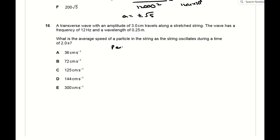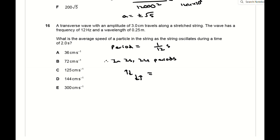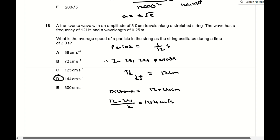For question 16, find the average speed of a particle in a transverse wave with frequency 12 Hz, so the period is 1/12 s. In 2 seconds there are 24 periods. In each period the particle travels from equilibrium to positive amplitude, back through equilibrium to negative amplitude, and back again — 4 × 3 cm = 12 cm per period. Over 24 periods that's 288 cm, giving an average speed of 144 cm/s.